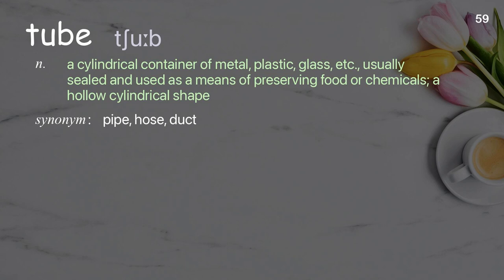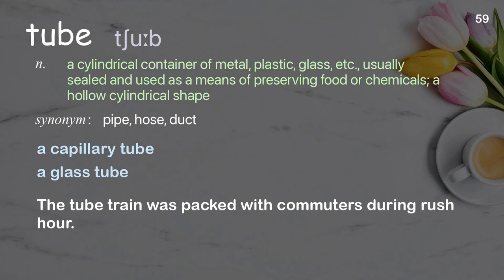Tube: A cylindrical container of metal, plastic, glass, etc., usually sealed and used as a means of preserving food or chemicals; a hollow cylindrical shape. Examples: a capillary tube, a glass tube. The tube train was packed with commuters during rush hour.